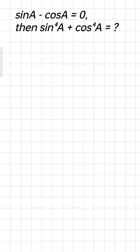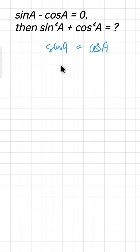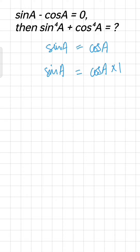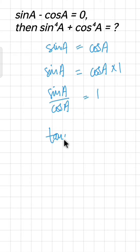Given that sin(a) minus cos(a) is equal to zero, we have to find the value of sin⁴(a) plus cos⁴(a). If we move minus cos(a) to the right side, we get sin(a) equals cos(a). Now if we bring cos(a) to the left side as denominator, we get sin(a) over cos(a) equals 1.